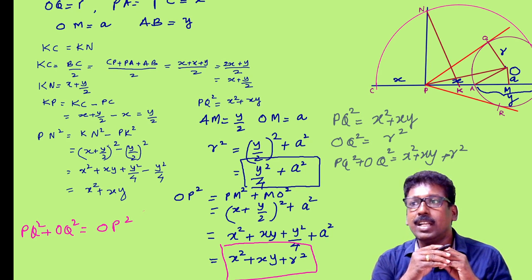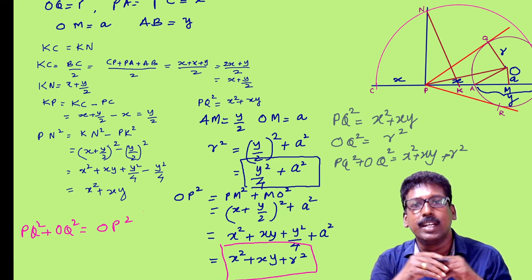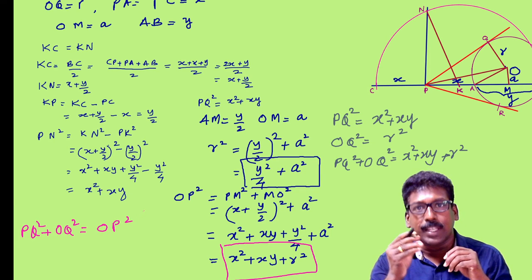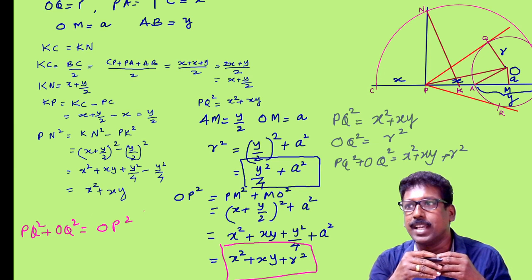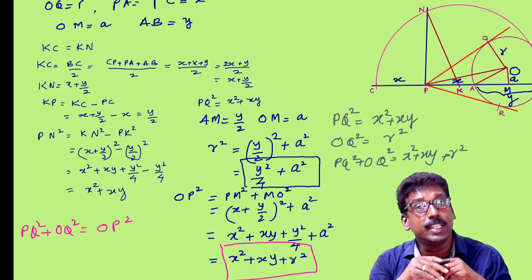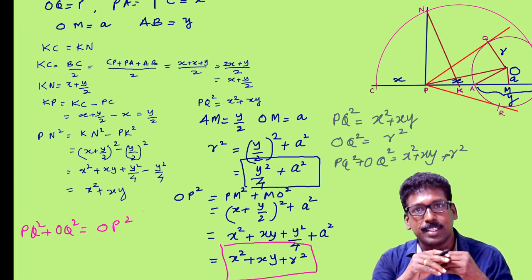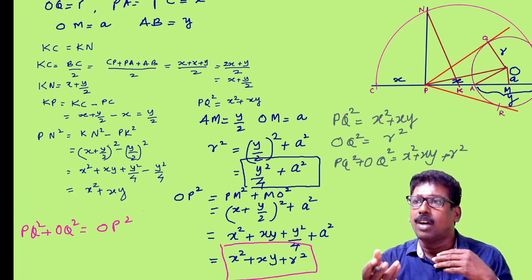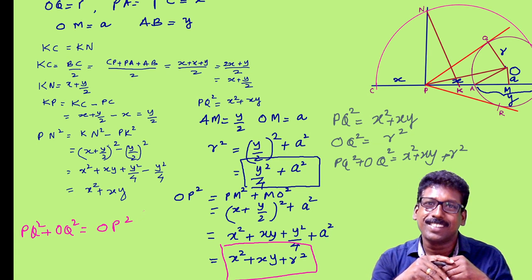That means triangle PQO is a right-angled triangle where angle Q is 90°, by the converse of Pythagoras. If that angle is 90°, that means angle OQP is 90°, so PQ is a tangent because a tangent is perpendicular to the radius through the point of contact. This is the justification for how PQ becomes the tangent. That is all for today's class. Have a nice day.